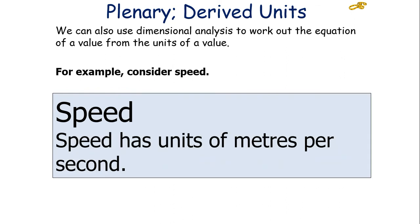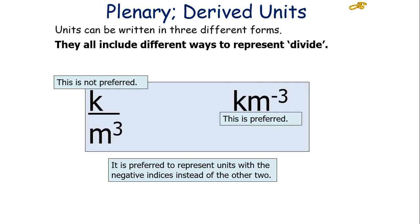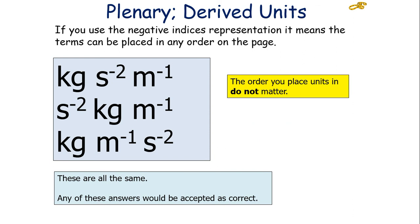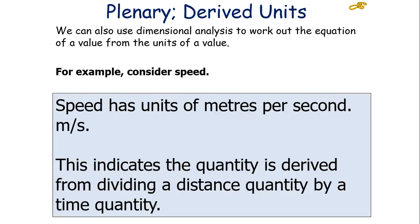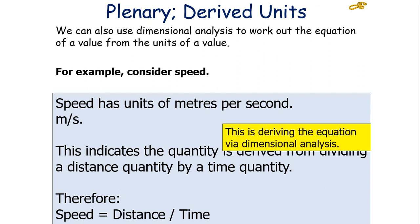We can also use dimensional analysis to work out the equation of a value from the units of a value. For example, speed. We know speed has units of metres per second, or m/s, so we can write that as m/s, m s to the minus one, or m over s, all appropriate ways to write that particular unit out. However, it's preferred that you write it with the indices. For example, it's better to write kg m to the minus three as opposed to kg over m cubed. It doesn't matter which order you place your values in on the page. It's all the same, so any answer will be accepted as correct. Because speed has units of metres per second, this indicates the quantity is derived from dividing a distance quantity by a time quantity. So therefore you know speed is equal to distance over time. This is derived in an equation via dimensional analysis.